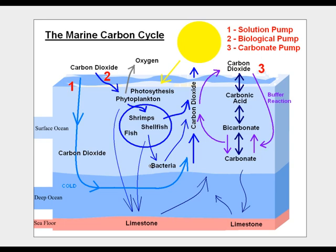For example, the shellfish here could die and sink to the bottom of the ocean, and if there were enough shellfish, that would eventually become limestone on the bottom of the ocean. The other process is that the carbonate can actually create calcium carbonate — and calcium carbonate is limestone, which can sink to the bottom of the ocean. Once again, this is a two-way reaction and the limestone can actually dissolve into the seawater again.